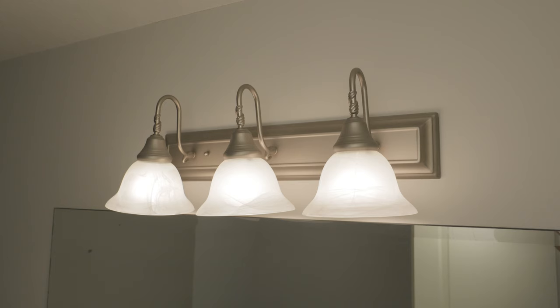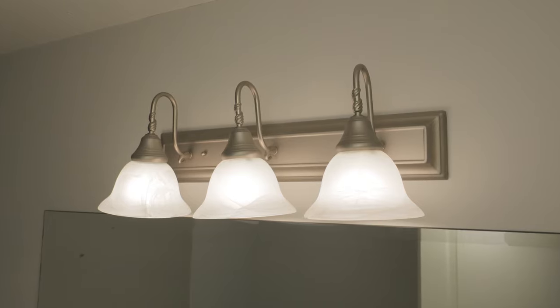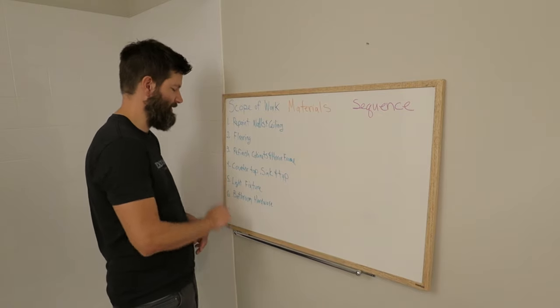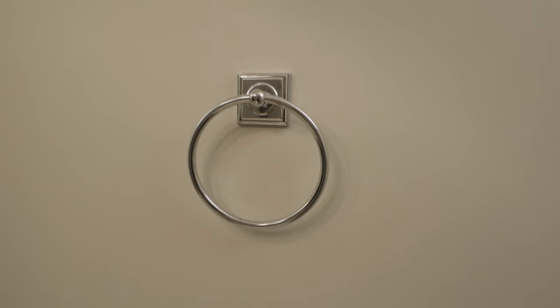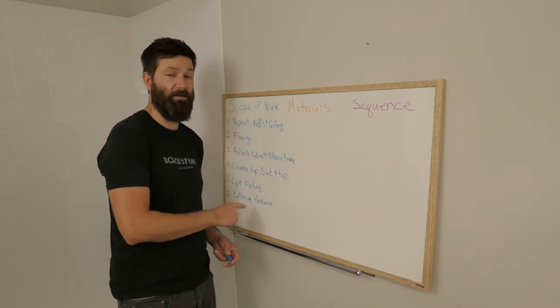So the next thing up is the light fixture. The light fixture doesn't currently match anything in the bathroom now and it's not going to match the future stuff. The next thing after the light fixture is the bathroom hardware. It's pretty dated again. It's starting to chip in a bunch of locations so we'll be replacing that.